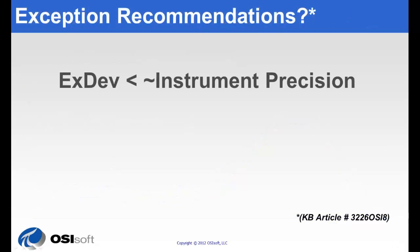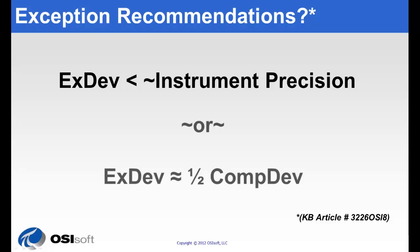Exception settings should generally be slightly less than the instrument precision, or you can set it to be about half of the compression deviation. For more details, you can consult this KB article on our website, 3226-OSI-8.